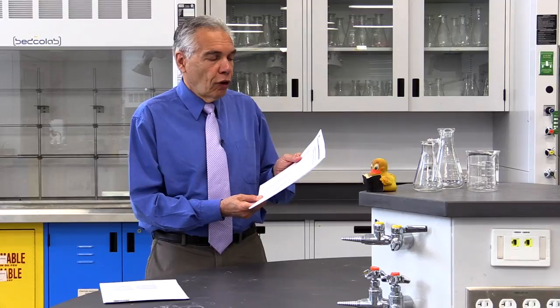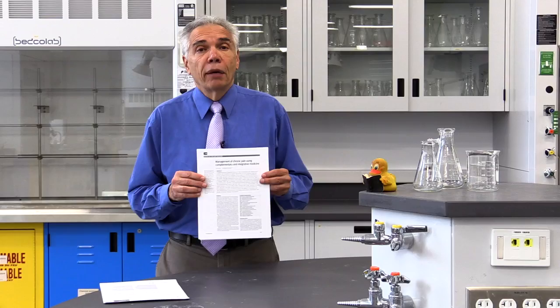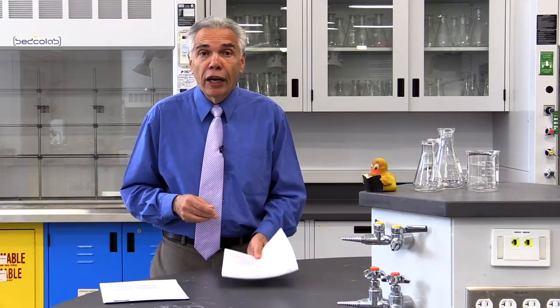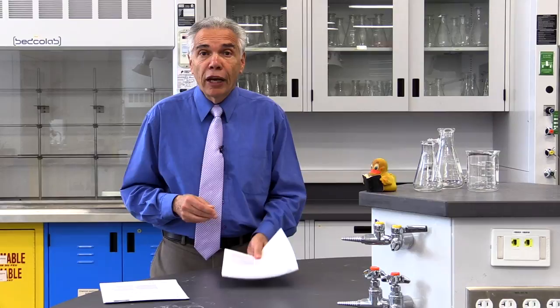If you get a paper for example like this, Management of chronic pain using complementary integrative medicine from the British Medical Journal, this is a substantial paper and it's reliable. British Medical Journal is a very good publication. They have a good record of refereeing.